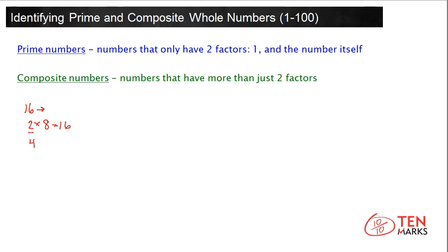4 times 4 also gets you 16, so 4 is a factor of 16. 8 times 2 gets you 16, so 8 is a factor of 16. So the factors of 16 are 2, 4, and 8.